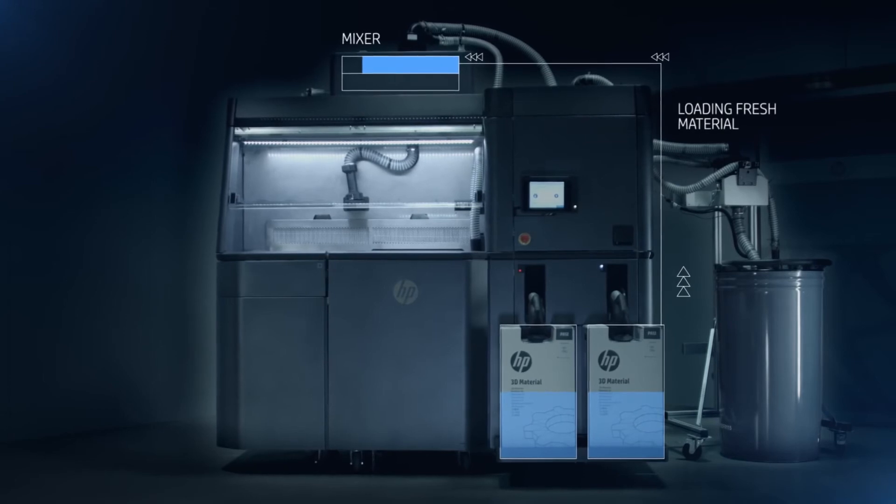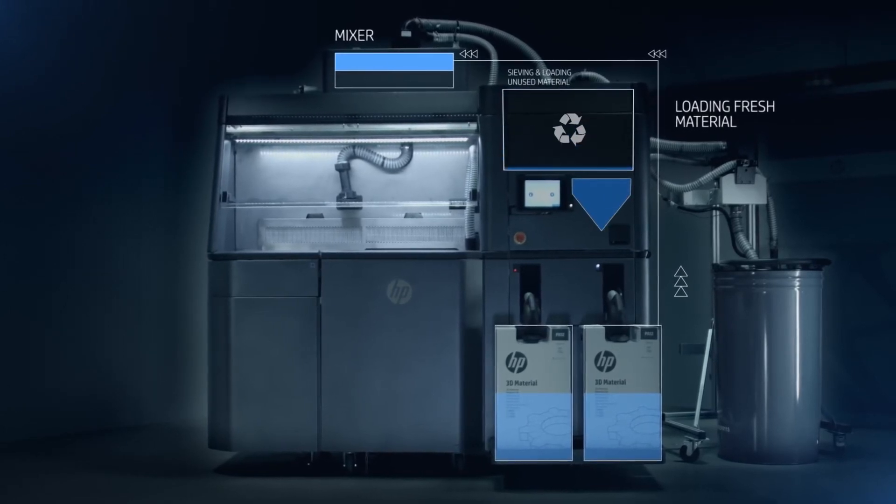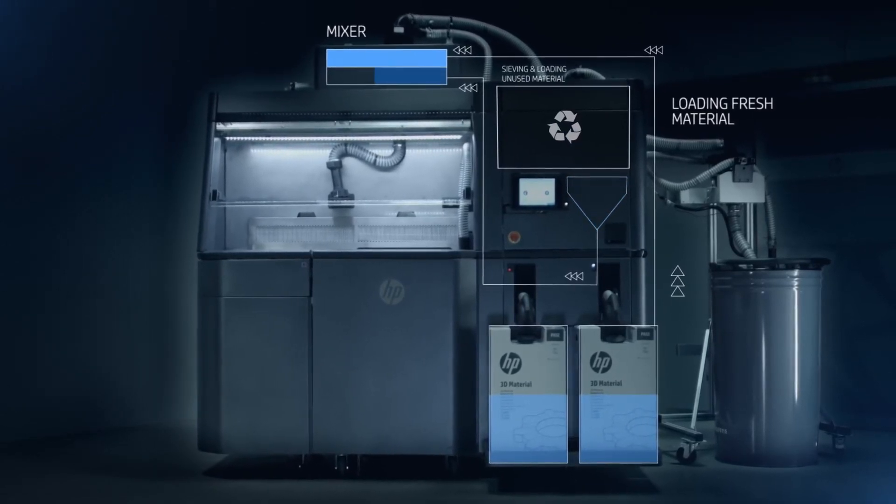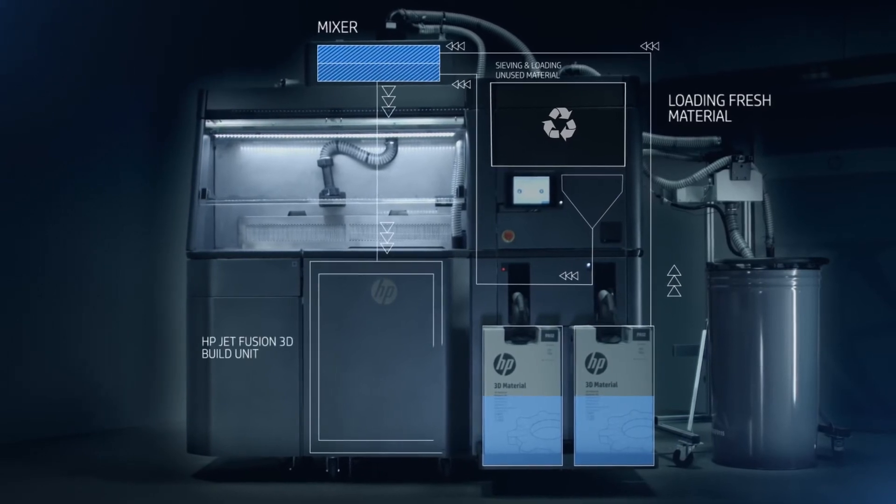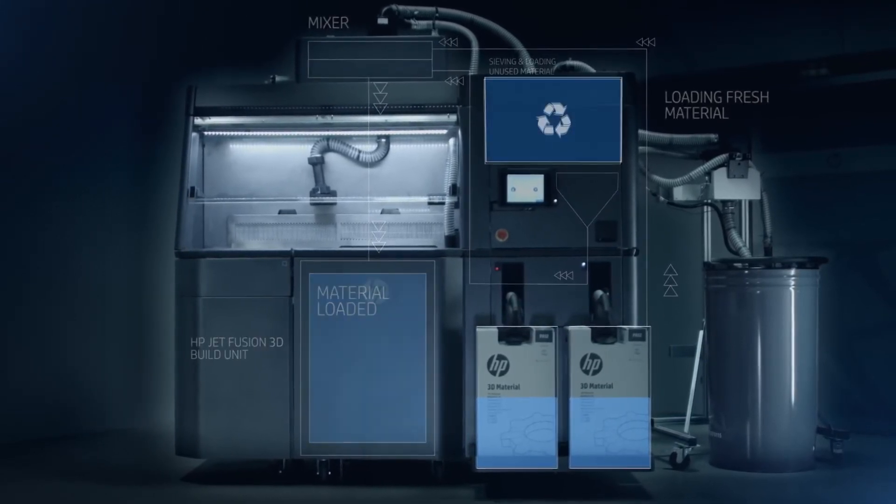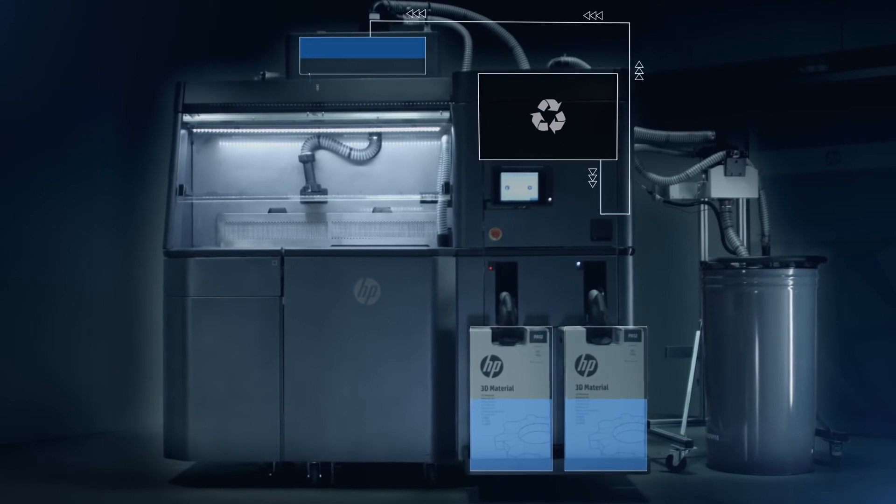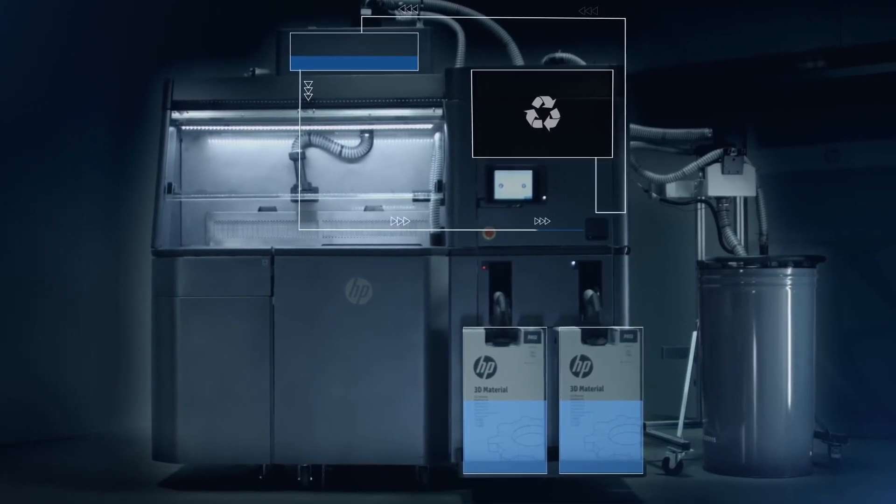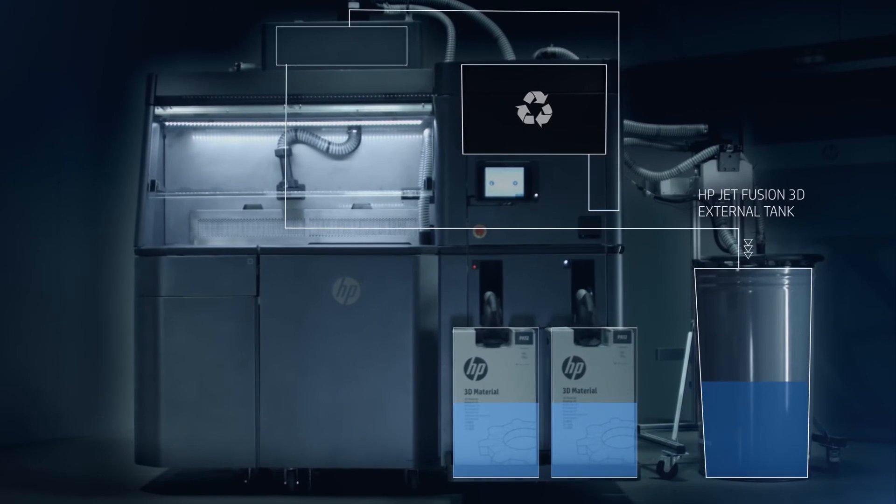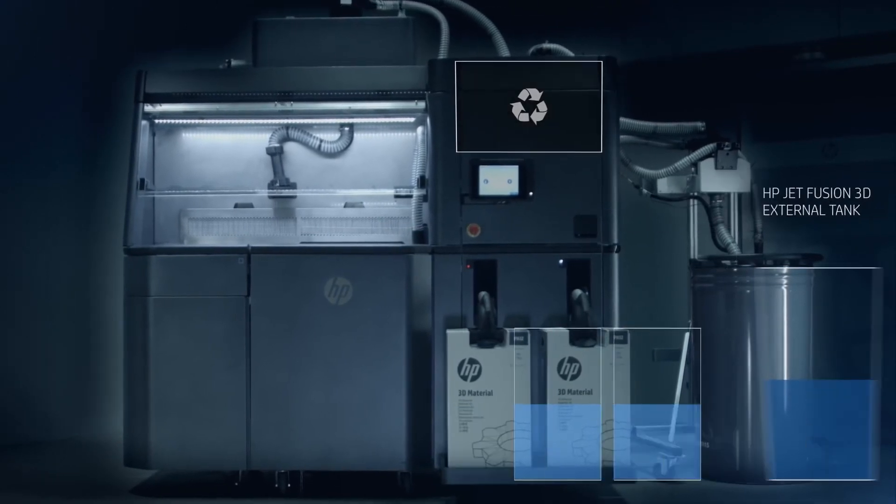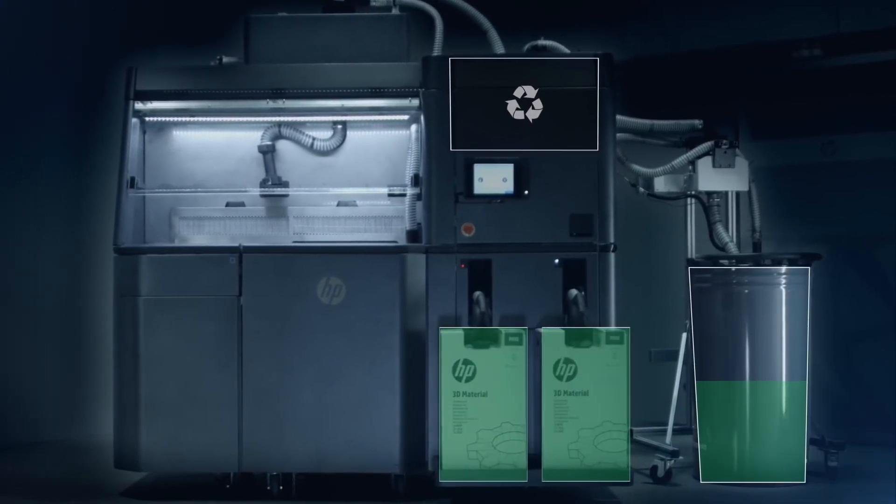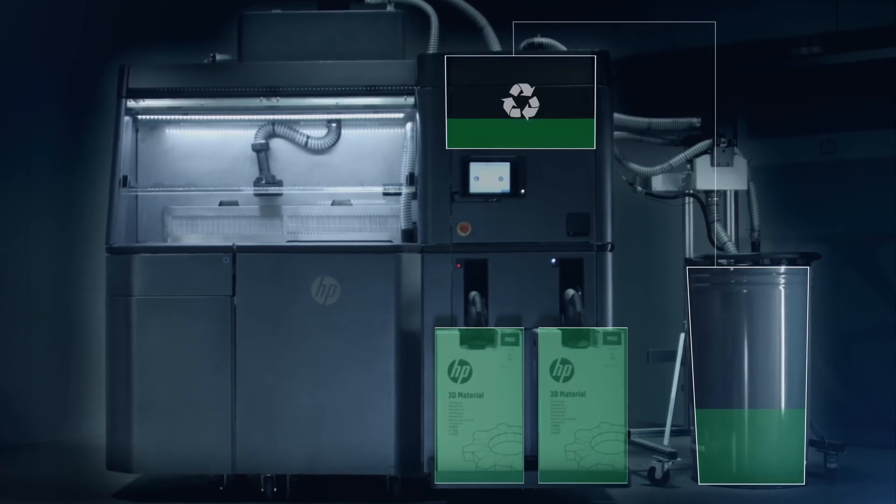The unused powder is recycled and mixed with fresh material, and once the build unit is filled, the processing station is ready for the next job. The HP JetFusion 3D printing solution offers the possibility to print using different materials. The HP JetFusion 3D external tank provides the option to extract recycled material from the processing station, so it can be replaced with a different material.